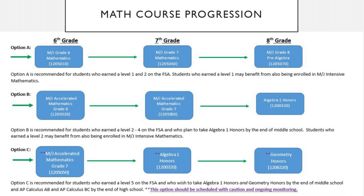Option A is really recommended for students who earned a Level 1 or 2 on the math FSA. Some students may even be placed in an intensive course depending on how they score. Option A is the standard course progression: 6th grade you take Grade 6 Math, 7th grade you take Grade 7 Math, and 8th grade you take 8th Grade Pre-Algebra, which prepares you to take Algebra 1 as a 9th grader.